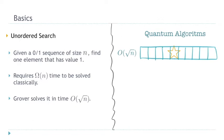There are some very famous problems that quantum algorithms can solve faster. Unordered search is one of them: given a 0-1 sequence of size n, we are looking for one element with value 1. Classically, we have to look at everything, requiring linear time. Grover's algorithm, which is a quantum algorithm, solves it in time √n.